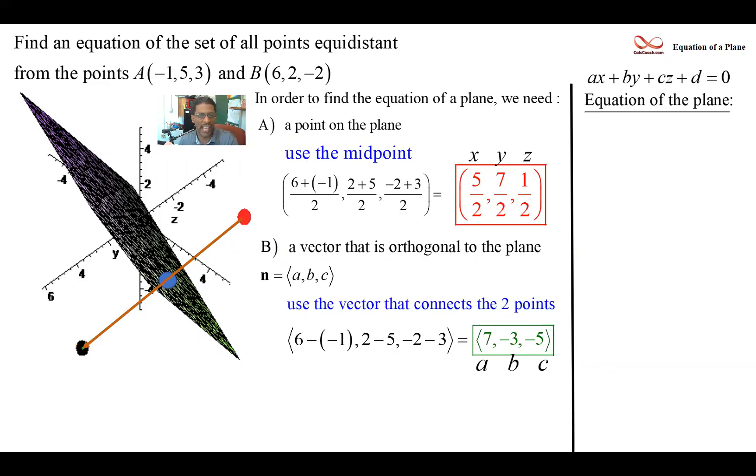So we plug in. The A, B, and C, their coefficients on the XYZ. So we take them, and we throw in now the XY and Z from the point. Five halves, seven halves, and one half.